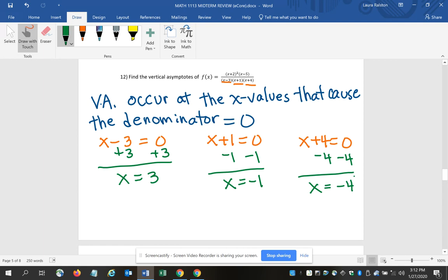So this particular rational function has 3 vertical asymptotes – that's okay. You can have 3, you can have 5, you can have 1. It is also possible that you don't have any – in this case there are 3: x equals 3, x equals negative 1, and x equals negative 4.